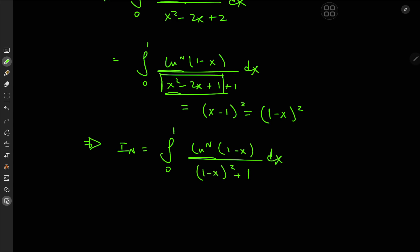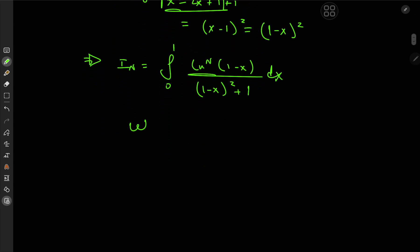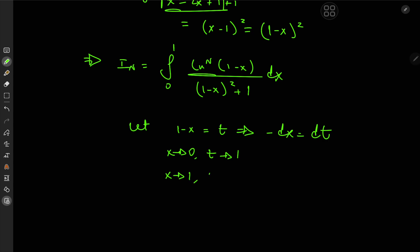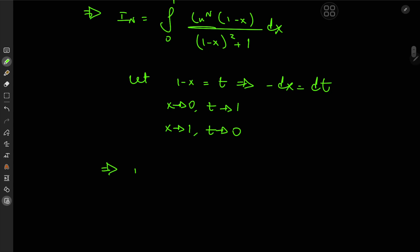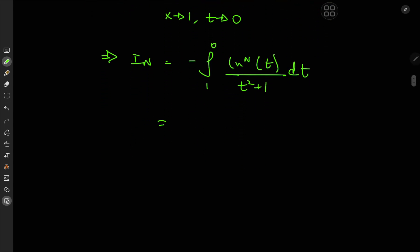Now we introduce a substitution: let 1 - x = t, which implies -dx = dt. As x approaches 0, t approaches 1, and as x approaches 1, t approaches 0. So I_n equals negative integral from 1 to 0 of log^n(t) over t² + 1 dt. We switch the order of the limits of integration, which gives an extra negative sign that cancels, giving I_n = integral from 0 to 1 of log^n(t) over 1 + t² dt.